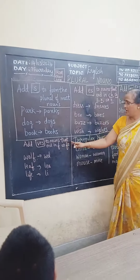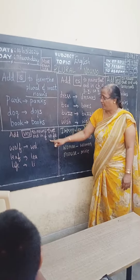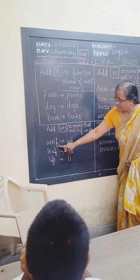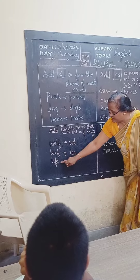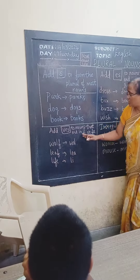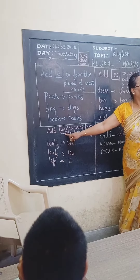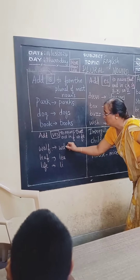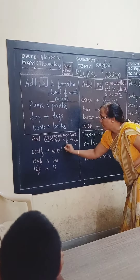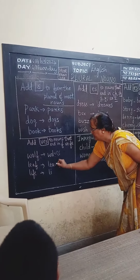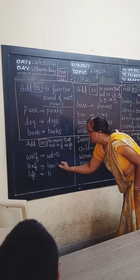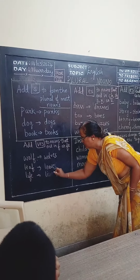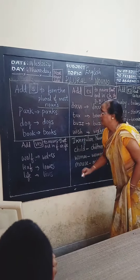Next, we look at words ending in F and FE. See how F is at the end. So we have to replace it — for example, 'leaf' becomes 'leaves'. Understood?